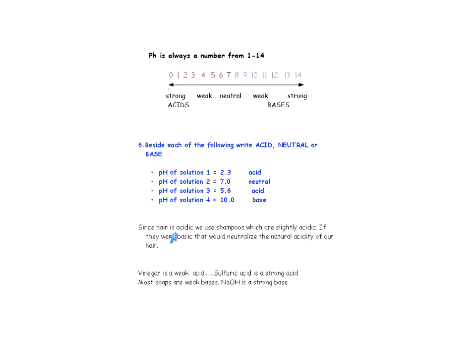When using shampoo, remember that hair is slightly acidic, so we use shampoos that are slightly acidic. If we used a basic shampoo, it would neutralize the natural acidity in our hair. Most soaps, though, are basic. Vinegar is a weak acid, whereas sulfuric acid is a strong acid — vinegar might have a pH close to 7, while sulfuric acid might be 0, 1, or 2. Sodium hydroxide is a strong base with a pH of maybe 12 to 14.